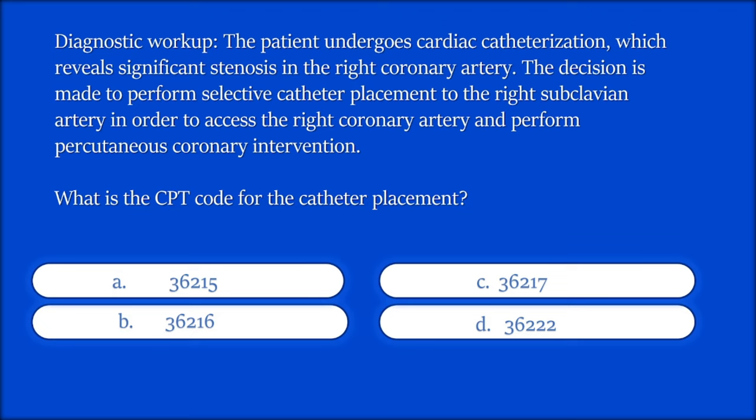The patient undergoes cardiac catheterization which reveals significant stenosis in the right coronary artery. The decision is made to perform selective catheter placement to the right subclavian artery in order to access the right coronary artery and perform percutaneous coronary intervention. Only code for the catheter placement here.